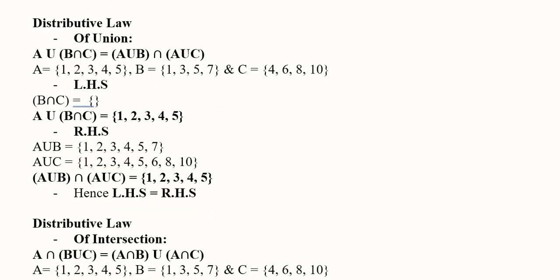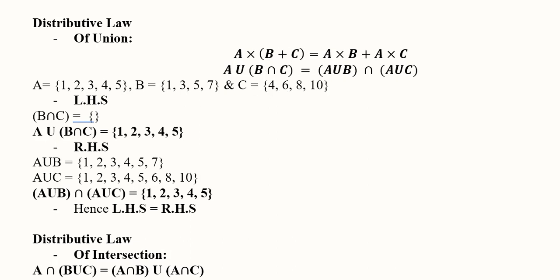Now we come to the final third law — the distributive law — which will again be demonstrated with both union and intersection. In this case, we intersect the second and third sets first, then introduce A with a union sign. That union sign is distributed over B and C. This is similar to the distributive property in algebra: A multiplied by (B + C) equals A·B + A·C. The set notation follows that same algebraic pattern.